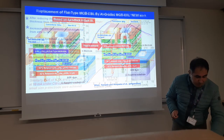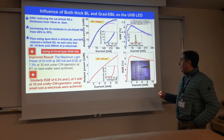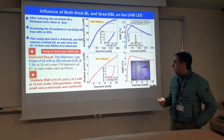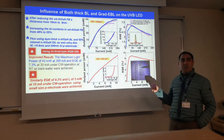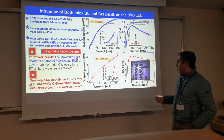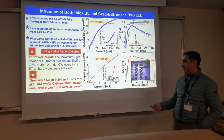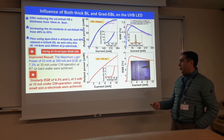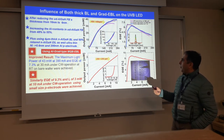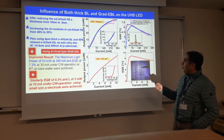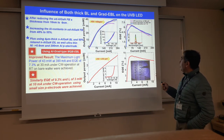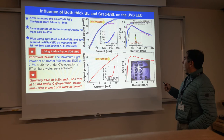Based on this new structure, we successfully got 9.3% EQE, which as far as I know is the world record. The light output power was 3 milliwatts under 10 milliamps under CW operation using the small-size P-electrode. For the big size, we got more than 40 milliwatts and EQE also exceeded 7%.